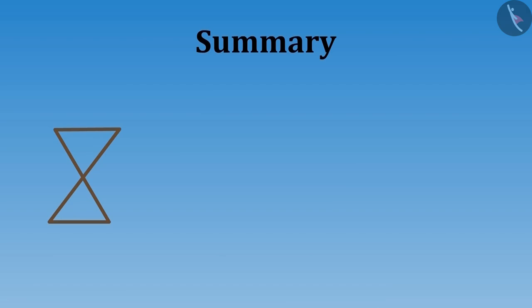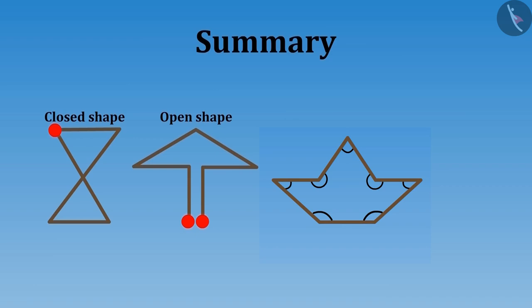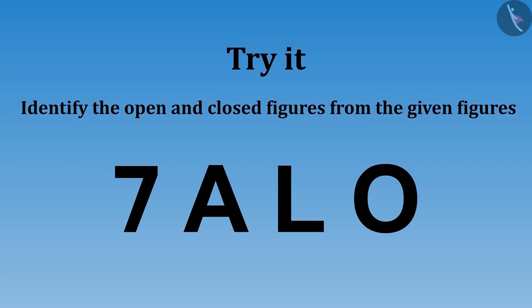In this video, we have learned that if the starting point and the end point of a shape are same, then it is known as closed shape. And if the starting point and the ending point of a shape are different, then it is known as an open shape. And we also saw an example of making a new shape by changing the angles of the shape.